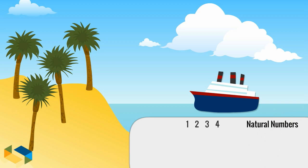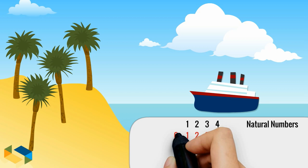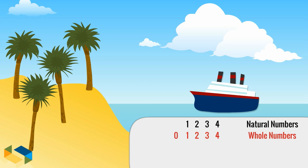Now let's count the number of small huts on the beach. Obviously there are none, so which number would represent this condition? Right, we add a zero to the natural numbers. This set is called whole numbers.